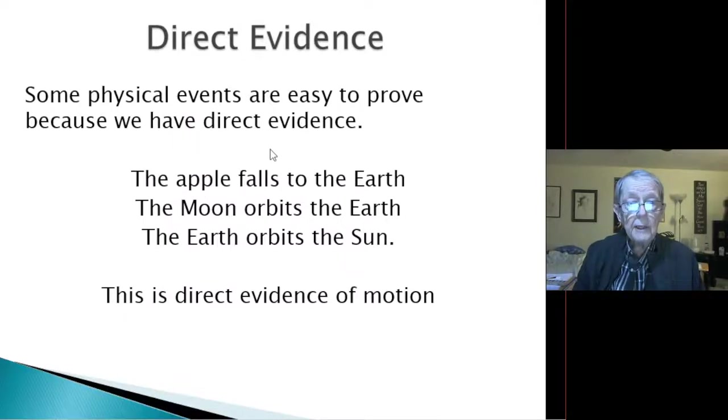Some physical events are easy to prove because we have direct evidence. We see the apple fall to the earth, the moon orbiting the earth, the earth orbiting the sun. This is direct evidence of motion.